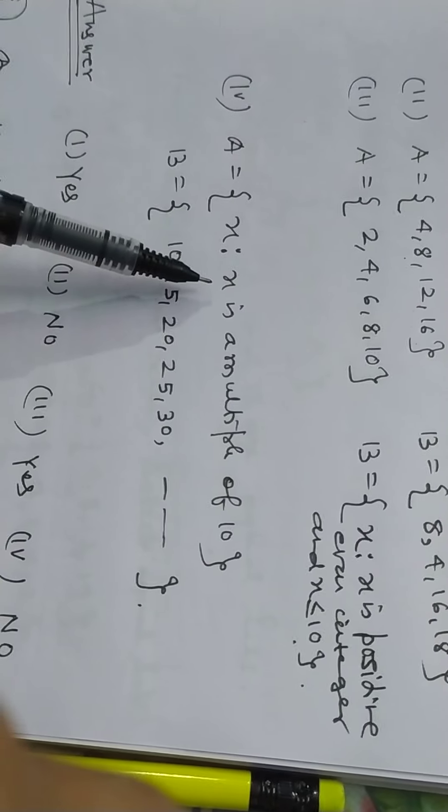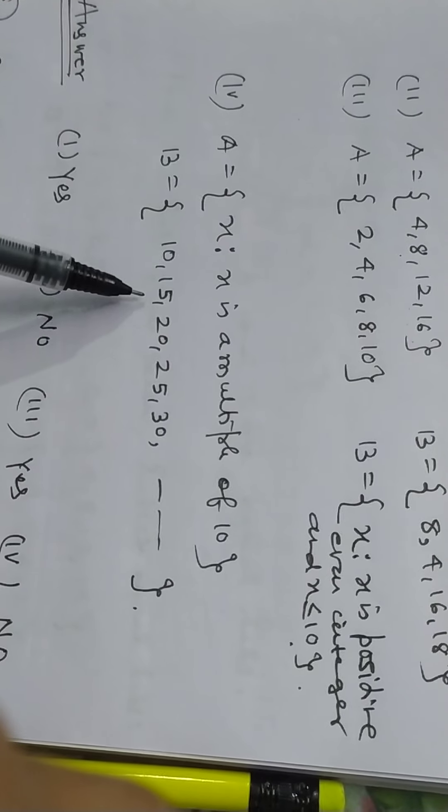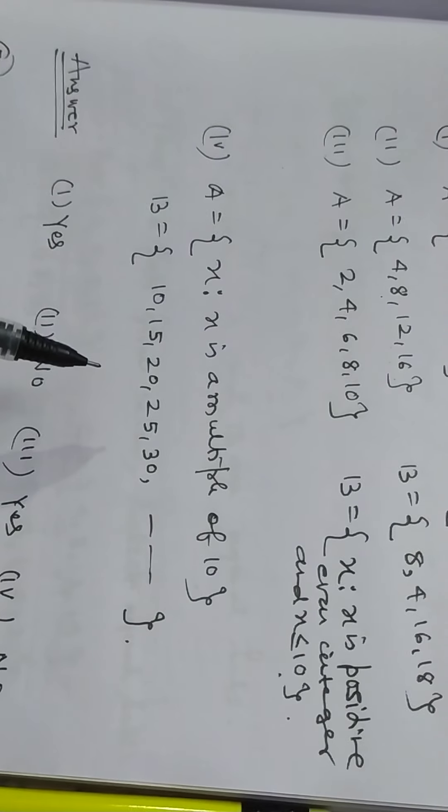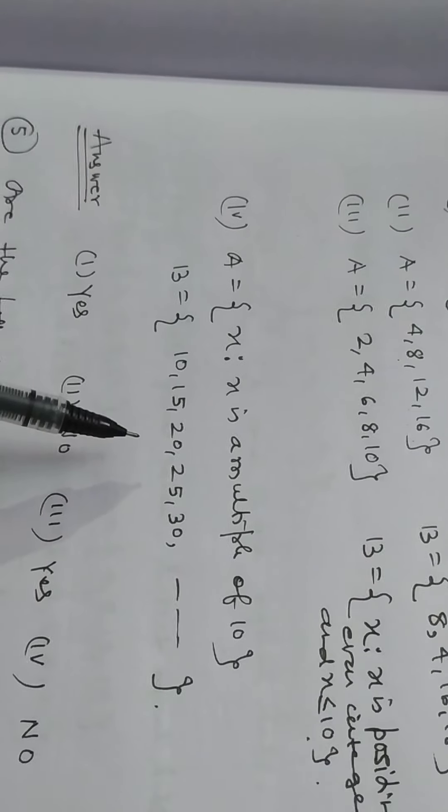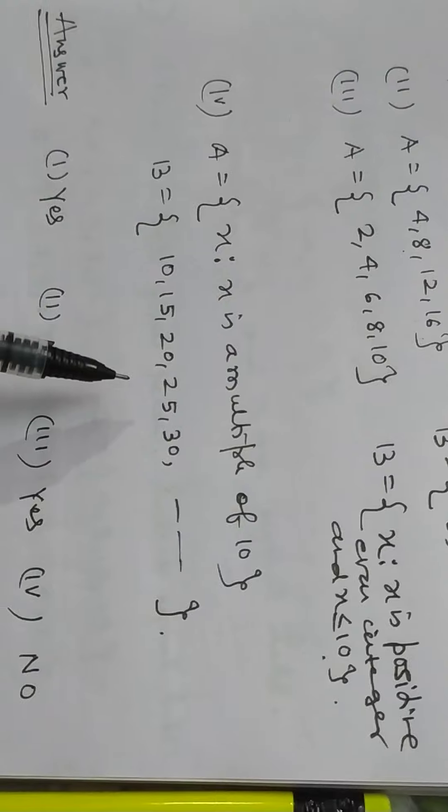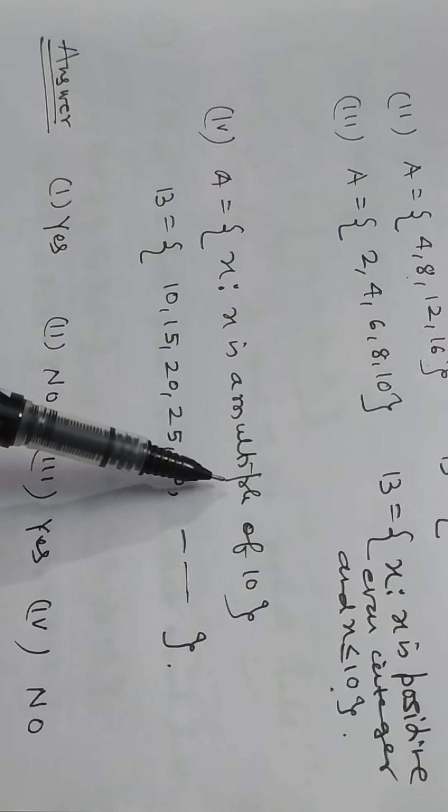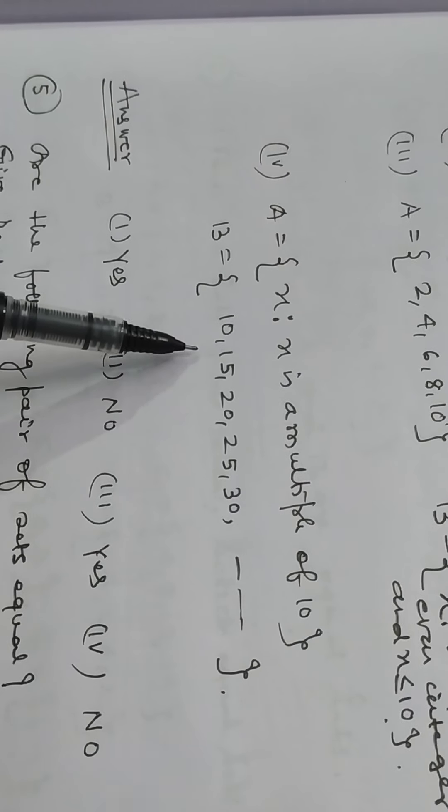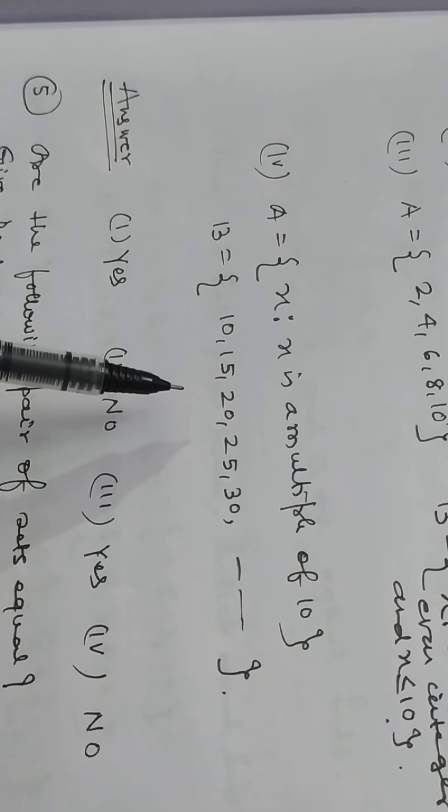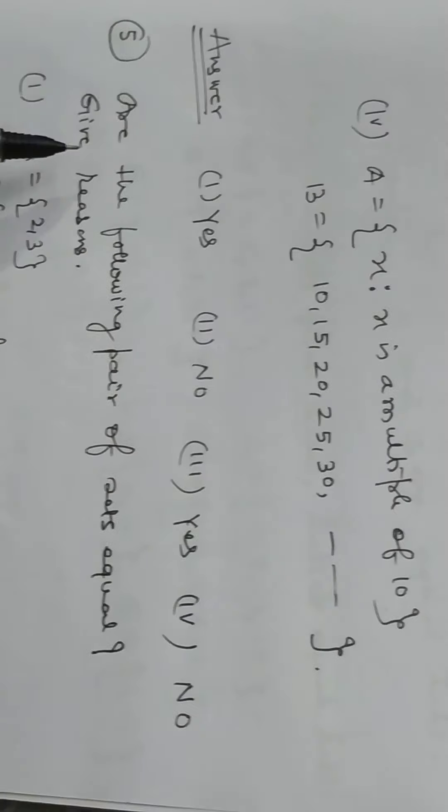Fourth, collection of element x, x is a multiple of 10 and B is equal to 10, 15, 20, 25, 30, both are not equal sets. X is a multiple of 10 is 10, 20, 30. In this, this type of number will be present in set and here it is not, all numbers are not the multiple of 10.